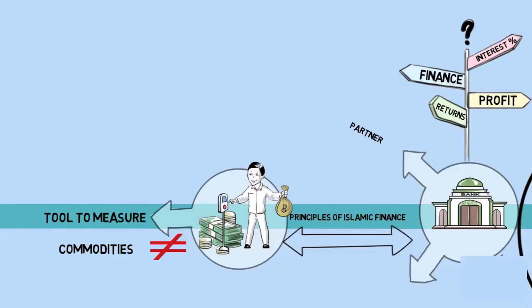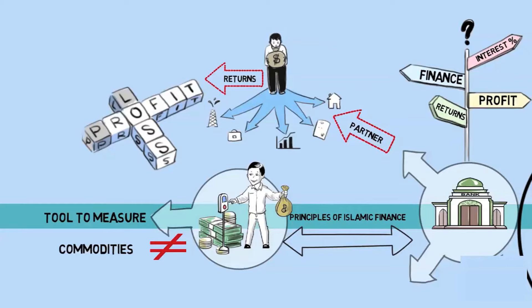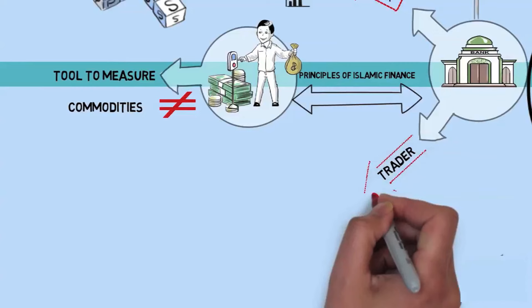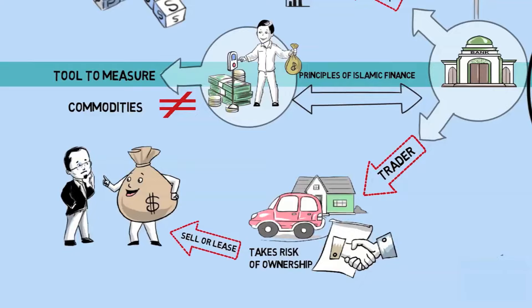An Islamic bank plays two roles. One, as a partner, where it invests the funds of the depositors in sharia-compliant business ventures, and provides them a return on a profit and loss-sharing basis. And the second, as a trader, where the Islamic bank purchases assets, bears the risk of ownership, and then either sells or leases out the assets to the customers who require financing.